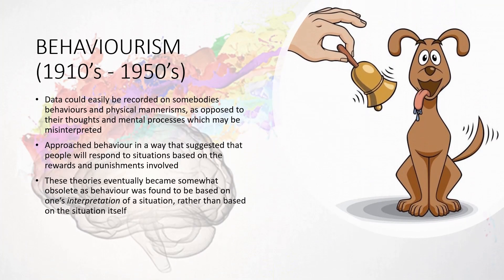Behaviorism was the study of behavior — something seen as objective that you could watch and describe with clear, precise language, making it seemingly more objective than introspection. Behaviorism dominated the first half of the 20th century. It approached behavior by suggesting that people respond to situations based on rewards and punishments, involving a concept called classical conditioning, which will be explored in later videos.